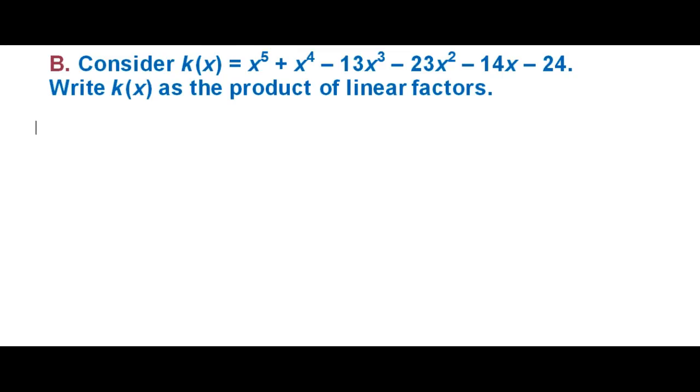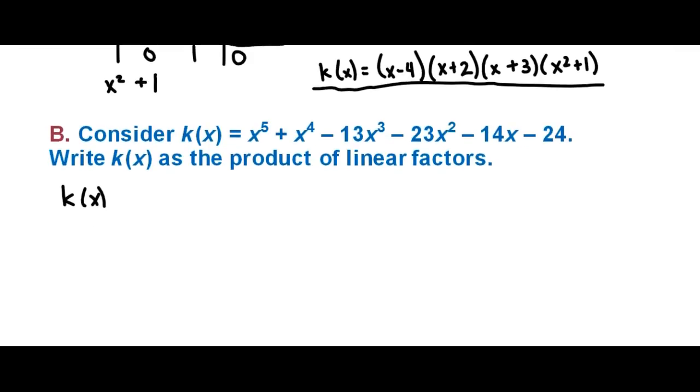Part B asks us to write k(x) as the product of linear factors only. We know from earlier that k(x) can be factored down into (x - 4)(x + 2)(x + 3) and x^2 + 1. We have no issue with the first three factors because they're all linear. The only factor we take issue with is x^2 + 1 since it's in quadratic form.